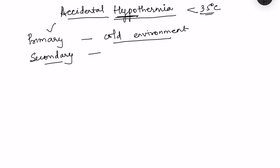In secondary causes, there are certain predisposed individuals in whom hypothermia can occur. The presence of systemic diseases predisposes individuals to secondary hypothermia. We can categorize those who are more susceptible to hypothermia.